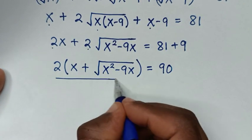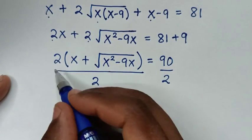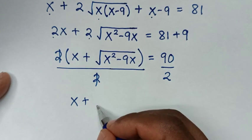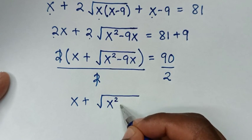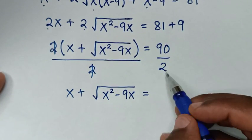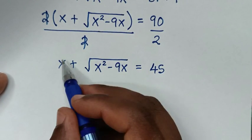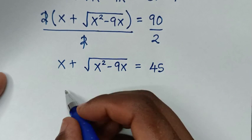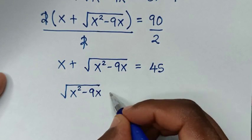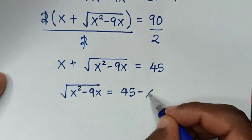We divide both sides by 2: the 2's cancel, giving x + √(x²−9x) = 45. Then we move x to the right side, so √(x²−9x) = 45 − x.